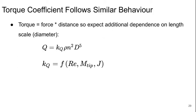We can also define a torque coefficient to non-dimensionalize the torque in a very similar way. The torque is just the force times the distance, so we expect that we need an additional dependence on the length scale here, which is the diameter. So the torque is the torque coefficient times rho N squared D to the 5. But again, the torque coefficient will just depend on the Reynolds number, tip Mach number, and advanced ratio.